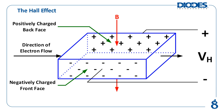The potential difference created between the back and front faces of the conductor is called the Hall voltage, VH. This generated Hall voltage is very small, usually on the order of microvolts, which means it needs to be amplified to help improve the effectiveness of the Hall Effect sensor. The amount of Hall voltage measured is directly proportional to the current and magnetic field strength and inversely proportional to the conductor thickness. Note that the Hall voltage is generated perpendicular to both the direction of the current flow and applied magnetic field.